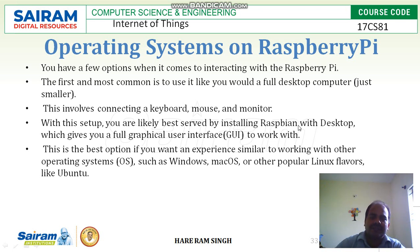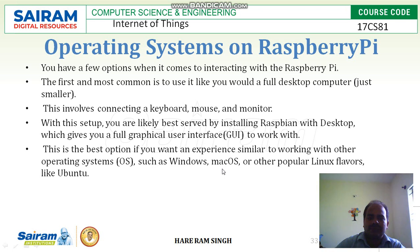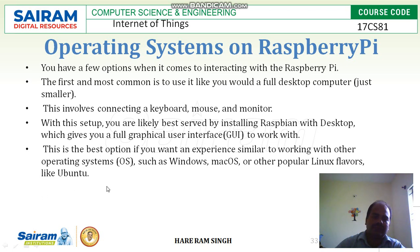Raspbian is an operating system that works like a desktop operating system. This is the best option if you want an experience similar to working with other operating systems such as Windows, Mac OS, or other popular Linux flavors like Ubuntu.